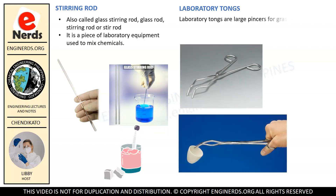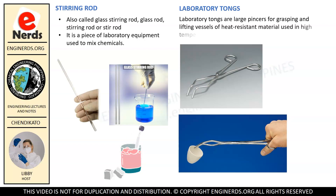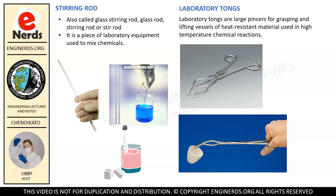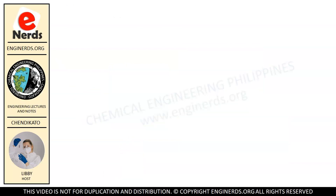Another tool that we use in the laboratory is what we call the laboratory tongs. Do not get confused between the tongs and the test tube holders — their functions are different. Laboratory tongs are large pincers for grasping and lifting vessels of heat-resistant material used in high-temperature chemical reactions.